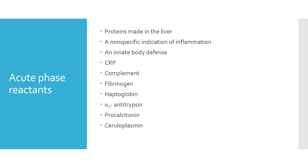There are several types of acute phase reactants. They are proteins produced in the liver and serve as a nonspecific indicator of inflammatory condition and tissue injury — an innate body defense. Examples include CRP (C-reactive protein), complement components C3 and C4, fibrinogen, haptoglobin, alpha-1-antitrypsin, procalcitonin, and ceruloplasmin, which is increased in Hodgkin's disease.